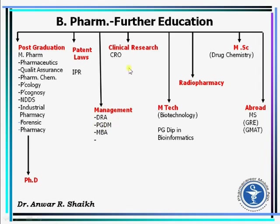In Clinical Research, there is a Certificate Course available through CROs. You can enter M-Tech Biotechnology after B-Pharm or pursue a Post-Graduate Diploma in Bioinformatics. You can also go for Radio Pharmacy, an MS in Drug Chemistry, and many more options including study Abroad through GRE and GMAT.